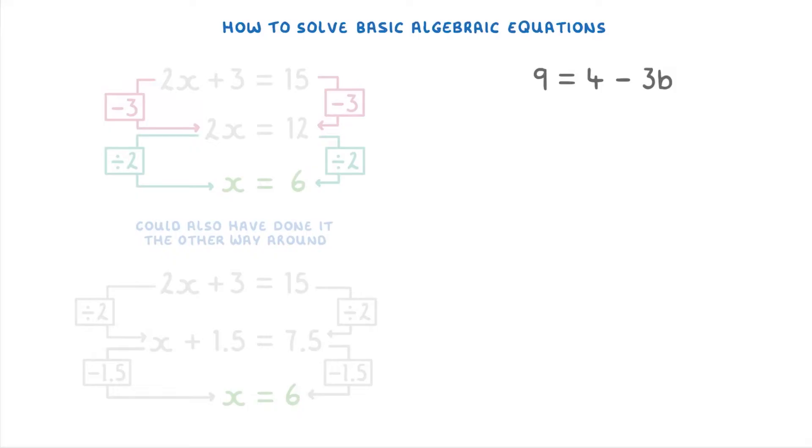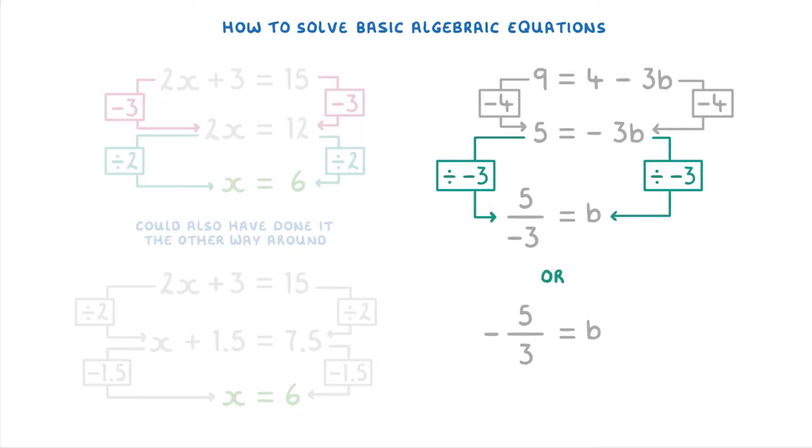For this next one, 9 equals 4 minus 3b, we need to get rid of the negative 3 and the 4. So first you need to subtract 4 from both sides to get rid of the 4 which gives you 5 equals negative 3b. And then you need to divide both sides by the negative 3 which gives 5 over minus 3b equals b. Or minus 5 thirds equals b. And it's perfectly fine to leave your answer in a fraction form like this, unless they specifically tell you not to.